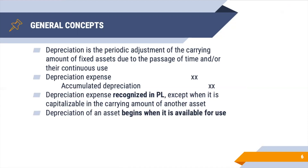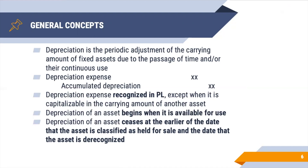Depreciation begins when the asset is already available for use — meaning when it is already in the location and condition intended by management. So it doesn't mean that if you haven't used it yet, you don't depreciate it. As long as it is already available for use, depreciation will start. And depreciation will end at the earlier of the date the asset is classified as held for sale and the date the asset is derecognized.